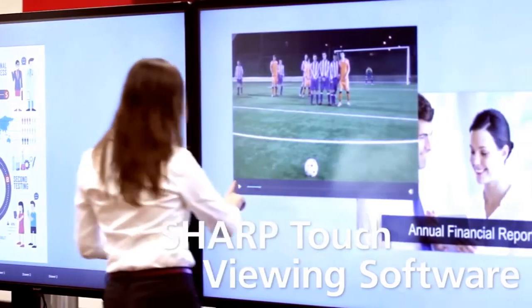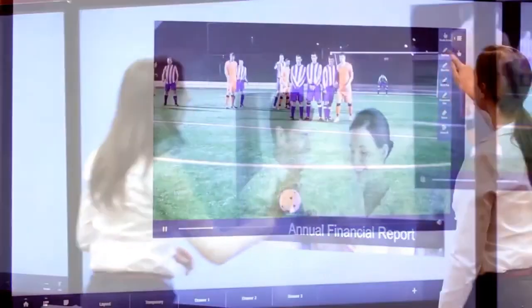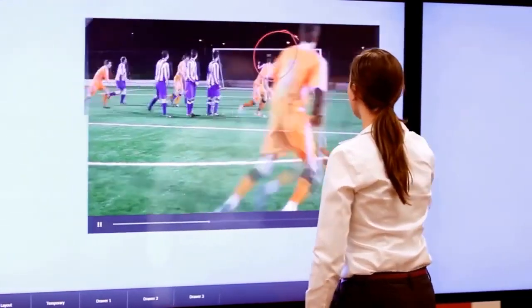New to the Big Pad series is the Sharp Touch Viewing Software, an on-screen interface that lets users organize different types of files, applications, and even videos belonging to a single collaboration project. Today's businesses and classrooms use a variety of different devices, and they all need to communicate.